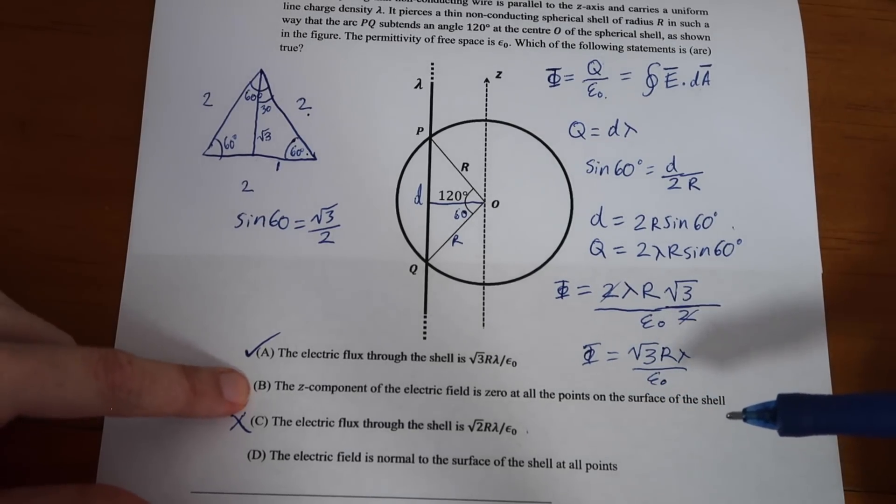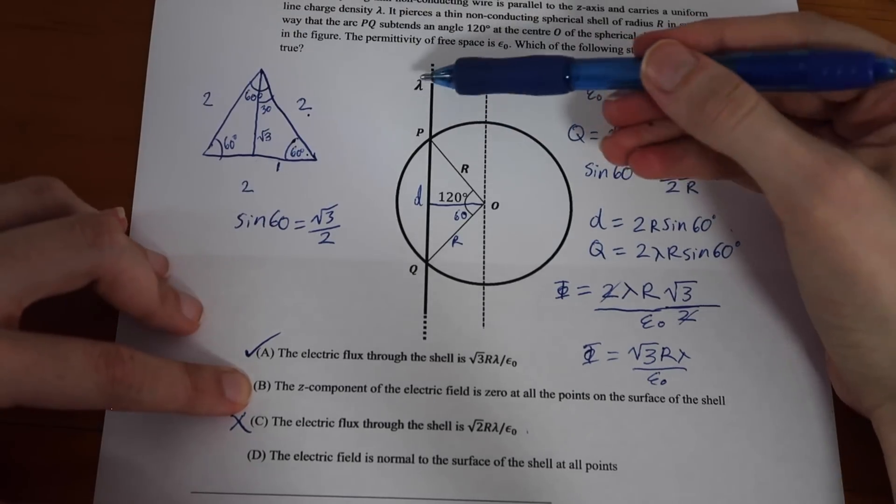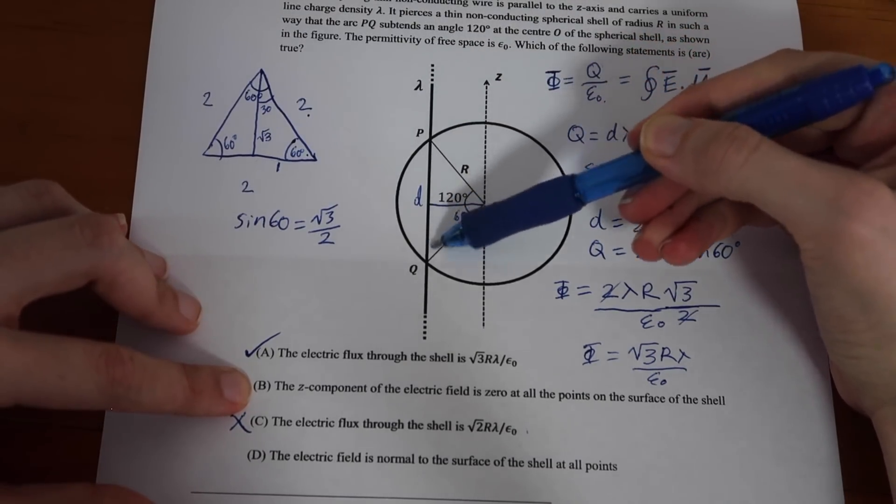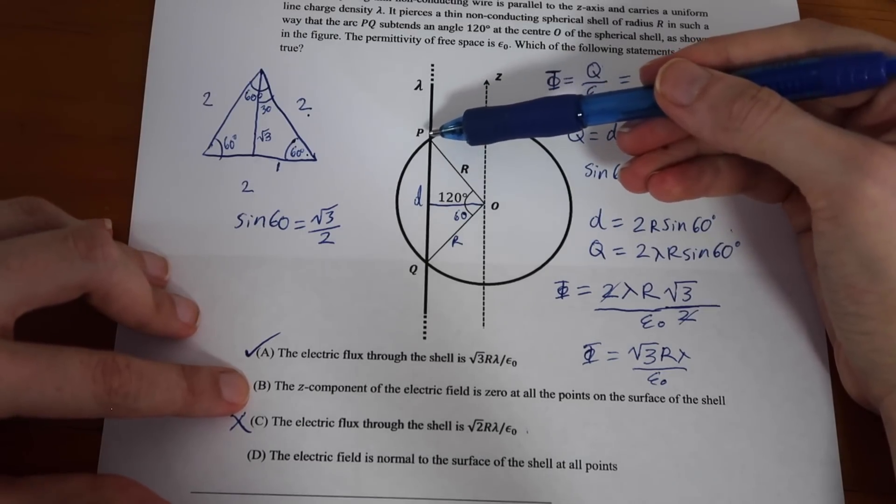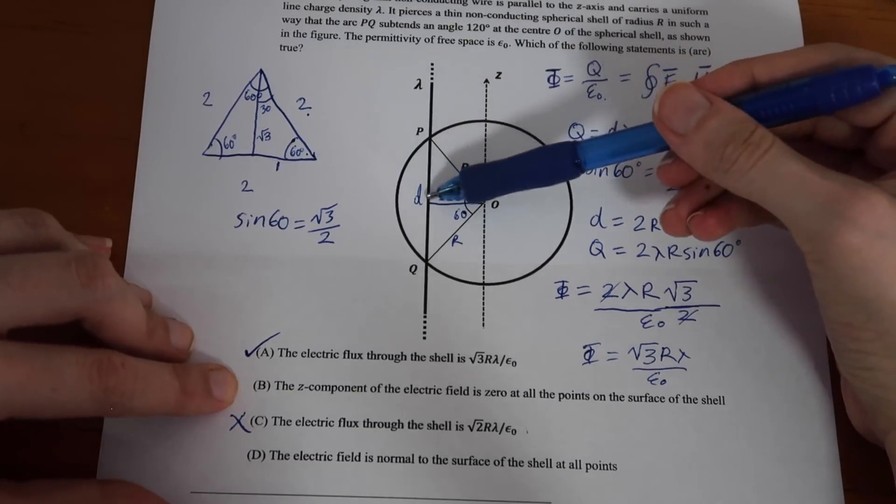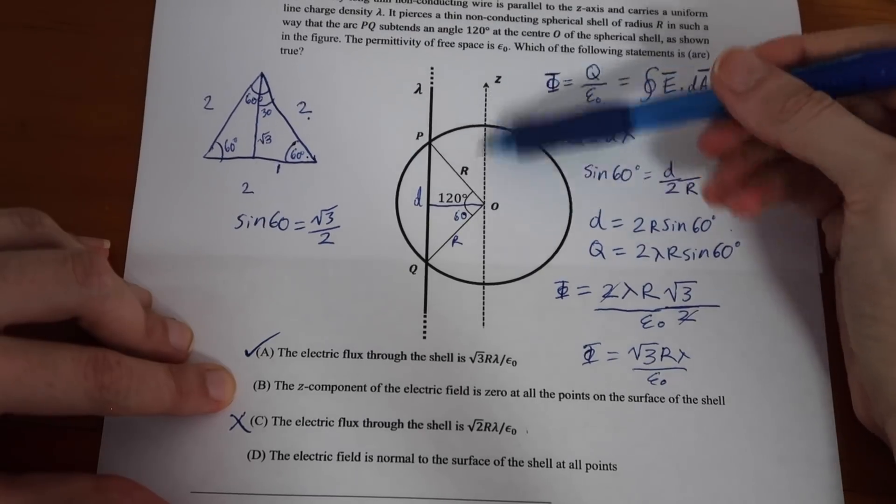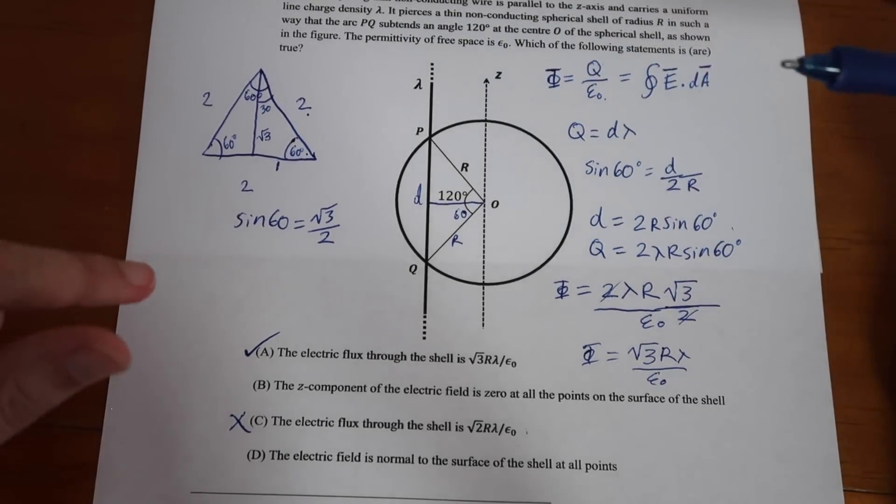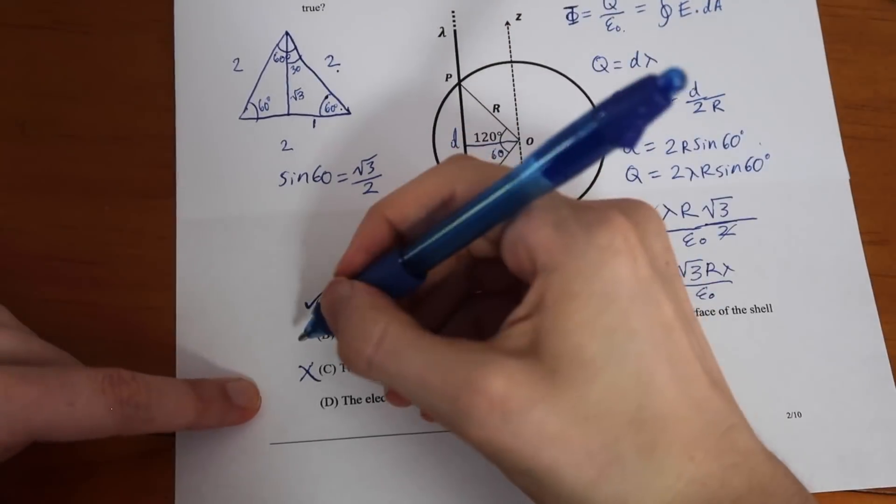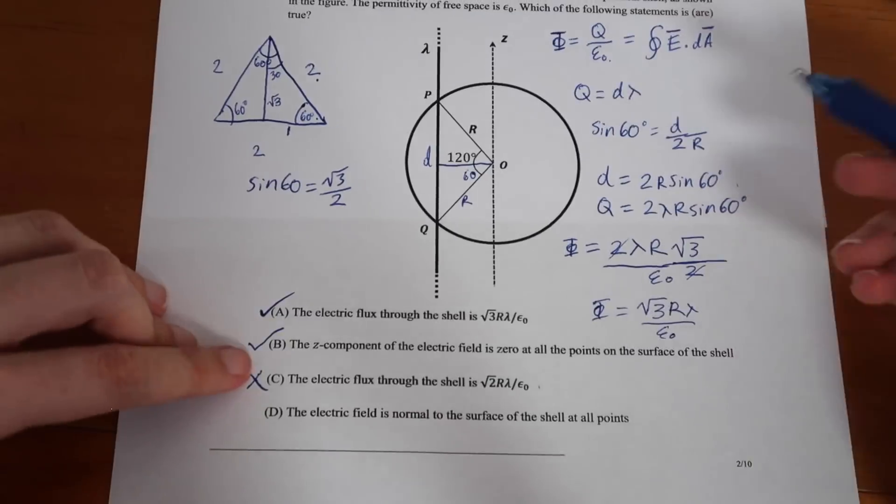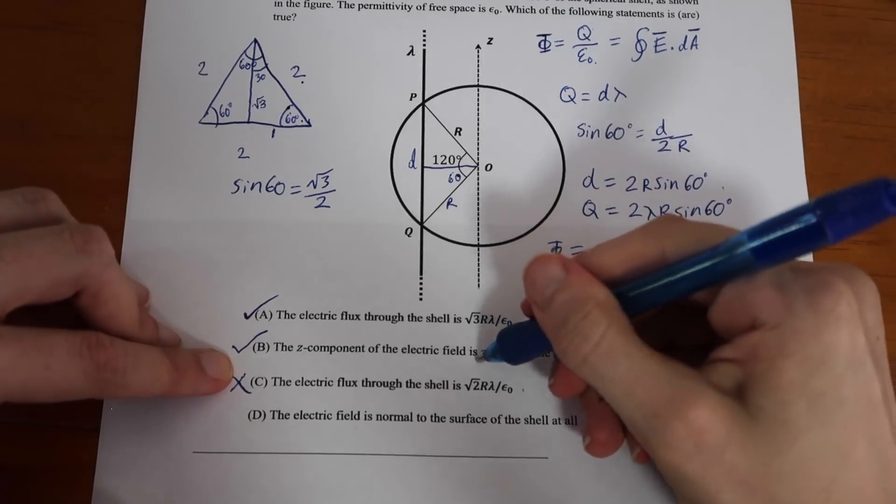The Z component of the electric field is 0 at all the points on the surface of the shell. Well, that is actually going to be true because the electric field that comes out of this charged wire here is going to come out radially. That means that in the Z direction, which is up and down, there aren't going to be any components of the electric field. So, this one is correct, that the Z component will be 0.